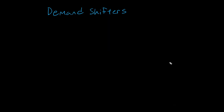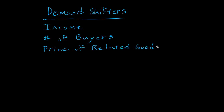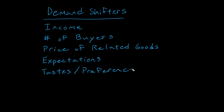In the last video we looked at an overview of the concept of demand. In this video we are going to be looking at what changes demand, or at least start looking at what changes demand. There are five demand shifters that we're going to talk about probably over the course of two videos. So: income, number of buyers, price of related goods, expectations, and tastes/preferences. These are the five shifters of demand.